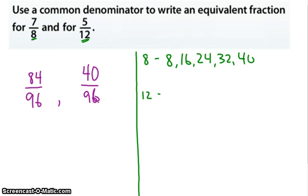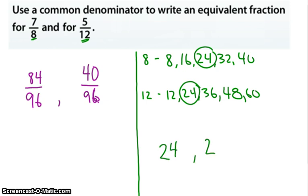And then I have 12, 24, 36, 48, and 60. So I look, do I have any multiples in common? And of course, I have 24 in common. So 24 is going to be my new denominator. So I get 24 and 24.